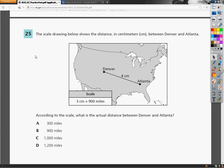The scale is 3 centimeters equals 900 miles. According to the scale, what is the actual distance between Denver and Atlanta? So what I need to do is either one of two things.